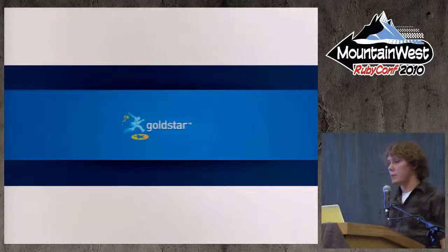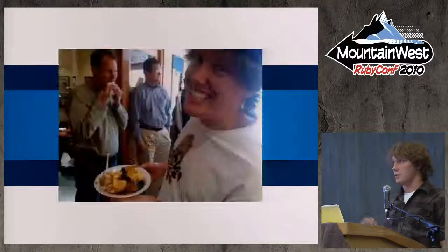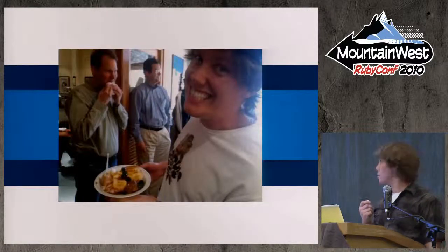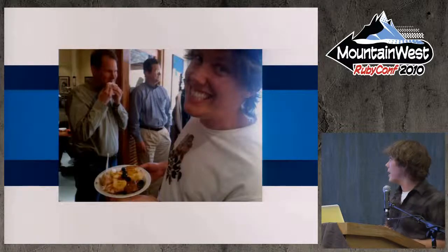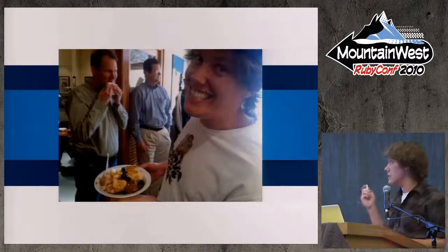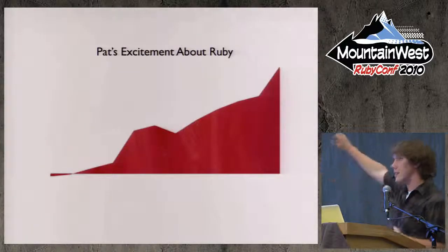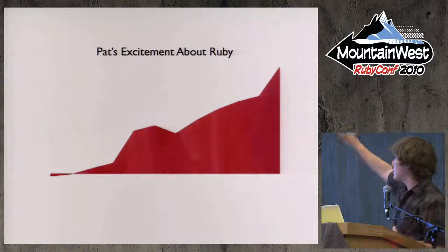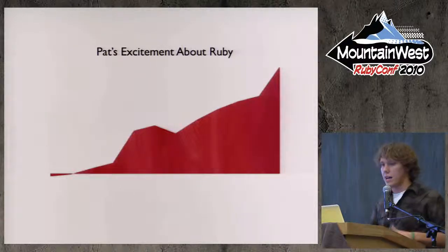So really quick things about me. I work for a company called goldstar.com — we sell tickets. This is me at Goldstar, really excited because we're having an ice cream party after a really good day. I tend to get excited about a lot of things. One of those is Ruby. And this is a completely made-up plot chart of my excitement with Ruby over the last five years.